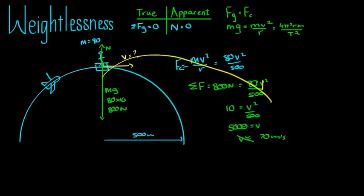So this was an example where we assumed someone was apparently weightless. The normal force was equal to zero. And we figured out the correct velocity that would enable them to keep moving in that circle.